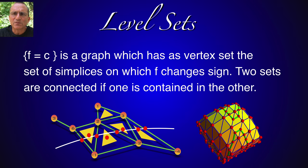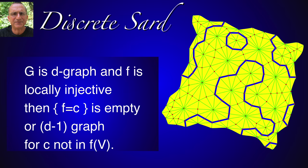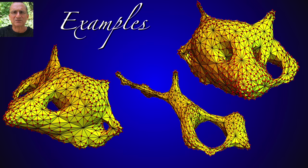In order to prove our theorem we cut the graph up. Given a locally injective function f we can define level surfaces in a d-graph and prove that it's always a d-1 graph if c is not in the image of f.